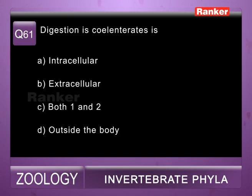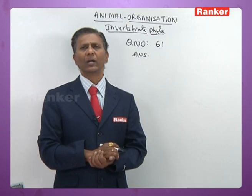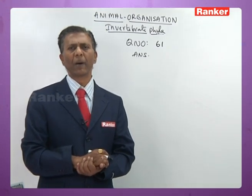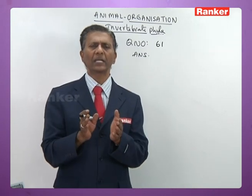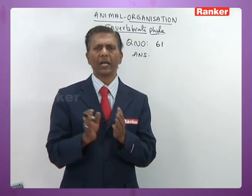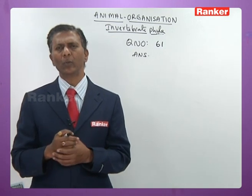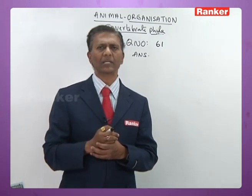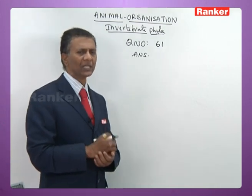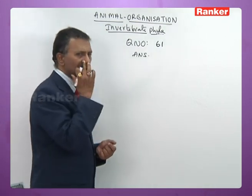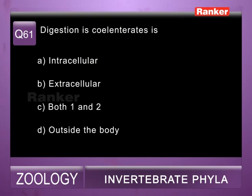Question sixty-one: digestion in Cnidaria (Coelenterata) is — a) intracellular, b) extracellular, c) both intracellular and extracellular, d) outside the body. Digestion in Cnidaria is partly intracellular and partly extracellular: part of food is digested in gastrovascular cavity (extracellular), then absorbed by nutritive muscular cells of gastrodermis where further intracellular digestion occurs. So sixty-first question answer is c.